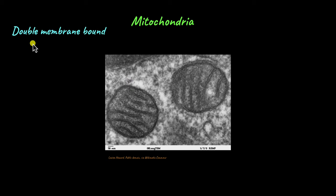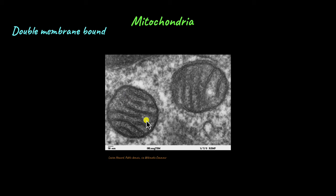Mitochondria are double membrane bound organelles, and this feature is unique to mitochondria and another organelle called chloroplast. Both these organelles have not one but two membranes covering them. Here in this image, which is a transmission electron microscope image of a lung cell with two mitochondria,